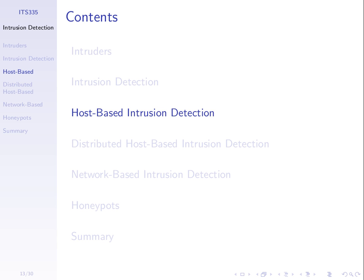We'll classify into three types of intrusion detection. Host-based — think of software that runs on a host, on a computer, and monitors what happens on that computer. From that monitoring, it tries to determine: is there an intruder or not? So, host-based runs on a computer.